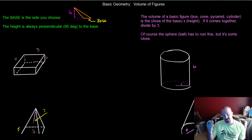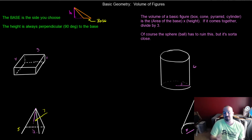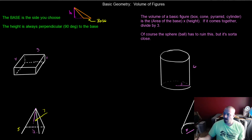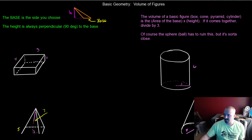The sphere being the ultimate circle in three dimensions has to be different than everything else, yet not that different — so it's kind of an oddity. But anyway, let's go ahead and get started.